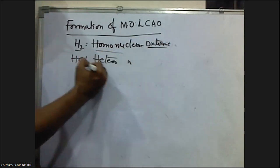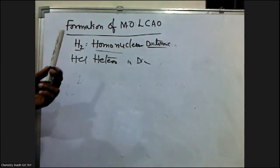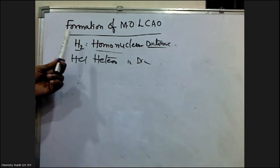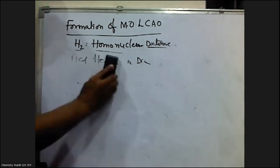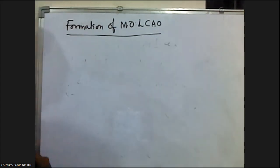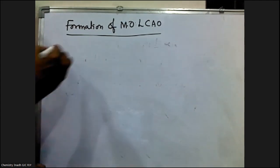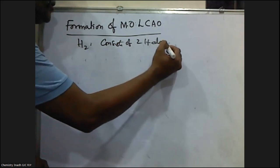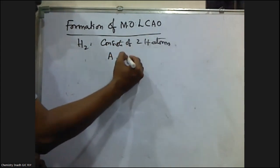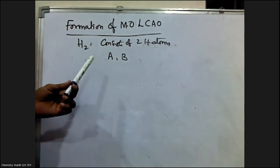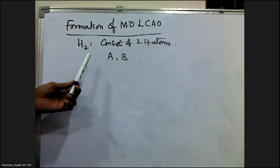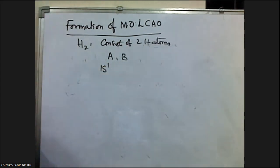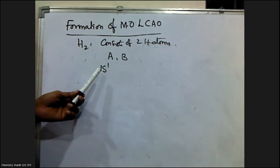Let me apply the LCAO method to the homonuclear diatomic molecule hydrogen, which consists of two hydrogen atoms. Let the hydrogen atoms be A and B. Each hydrogen atom has one electron in the 1s orbital in its ground state.